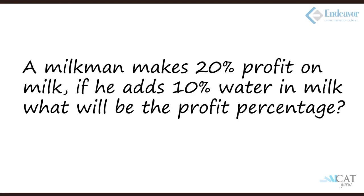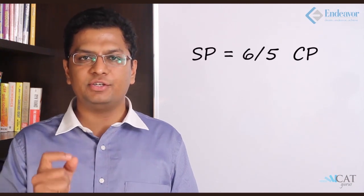Let's take another example. A milkman makes 20% profit on milk, but if he adds 10% water to the same milk, what will be the profit percentage? 20% profit was there, so SP = 6/5 × CP. Now let's add water. What's the price of water? For these purposes, we can assume it's zero. So 10 liters of milk plus 1 liter of water makes 11 liters. In the new 1 liter of milk, it's 10/11 of the original milk.